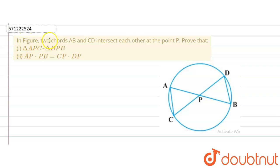The given question says that in figure, two chords AB and CD intersect each other at point P. They are intersecting at point P.